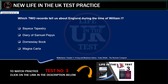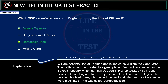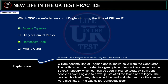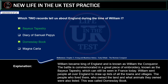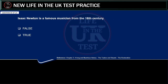Which two records tell us about England during the time of William I? Bayeux Tapestry. Diary of Samuel Pepys. Domesday Book. Magna Carta. Correct answer: Domesday Book and Bayeux Tapestry. William became King of England and is known as William the Conqueror. The battle is commemorated in a great piece of embroidery known as the Bayeux Tapestry, which can still be seen in France today. William sent people all over England to draw up lists of all the towns and villages, the people who lived there, who owned the land, and what animals they owned. This was called the Domesday Book.